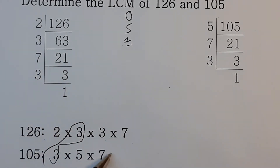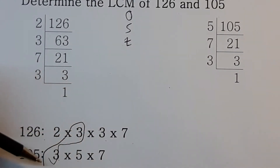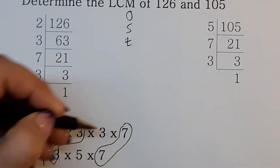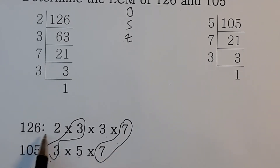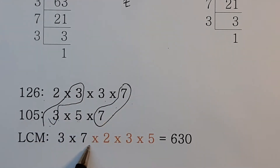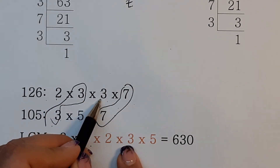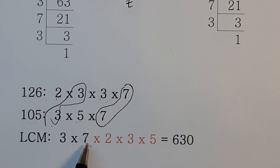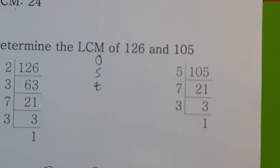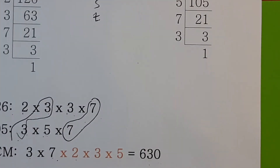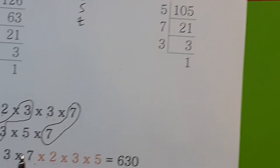The two doesn't have a match in the bottom line, so don't circle it. The extra three on top has no match below either. The seven can be circled as it appears in both. The five is also without a match. For the LCM, write down one of each circled pair, then write the single numbers standing outside the circles — three times seven times two times three times five. Calculate: three times seven is twenty-one, times two is forty-two, and so on, giving you six hundred and thirty — that is your LCM.